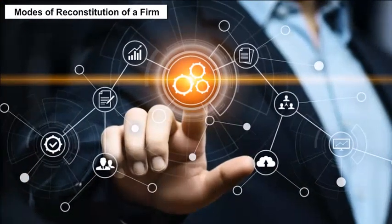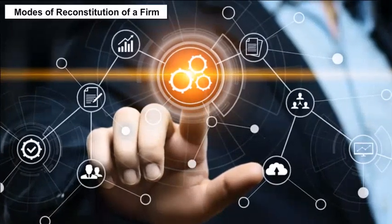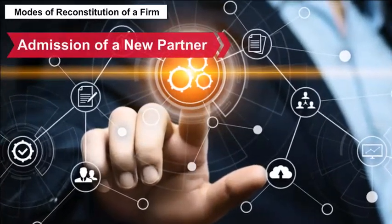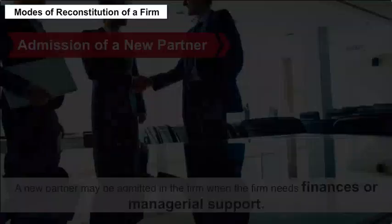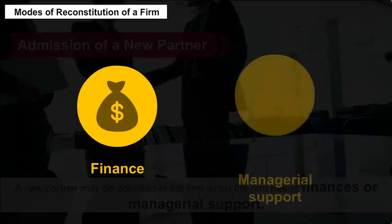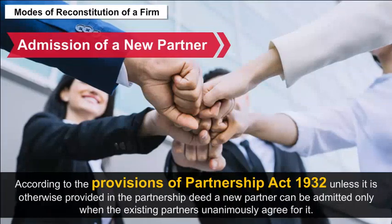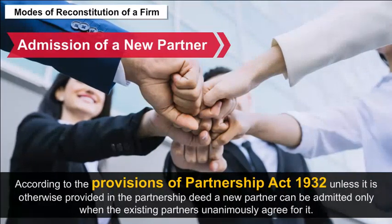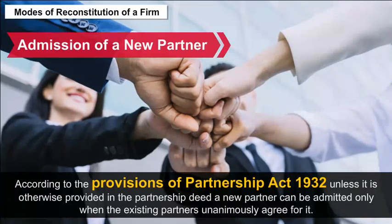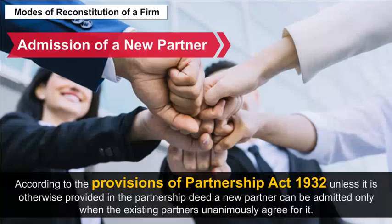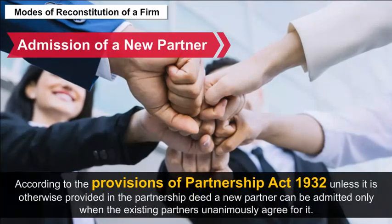Modes of Reconstitution of a Firm: The reconstitution of the firm happens in many ways. Admission of a New Partner: A new partner may be admitted in the firm when the firm needs finances or managerial support. According to the provisions of the Partnership Act 1932, unless otherwise provided in the partnership deed, a new partner can be admitted only when the existing partners unanimously agree.